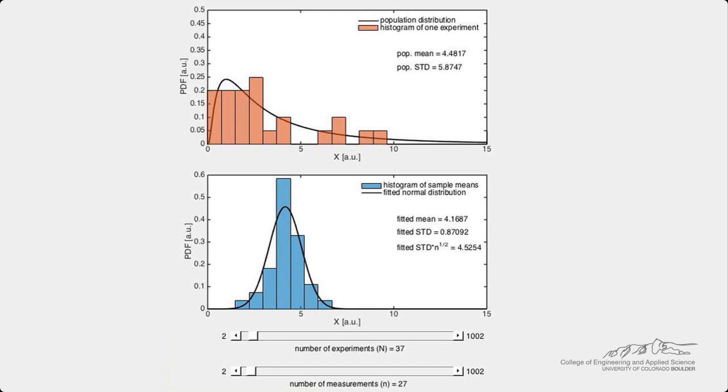The central limit theorem says that these sample means will be normally distributed with a mean equal to the population mean and a standard deviation equal to the population standard deviation divided by the square root of the number of measurements. And this will be true if the number of measurements is approximately greater than 30.